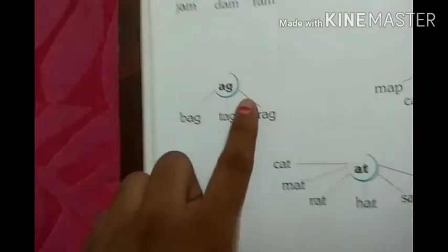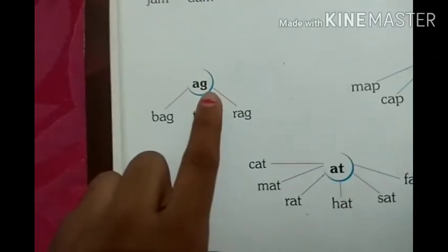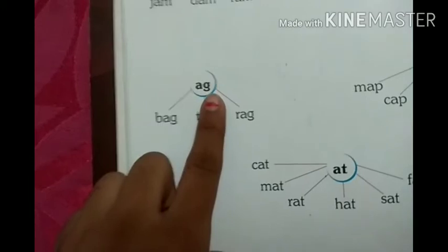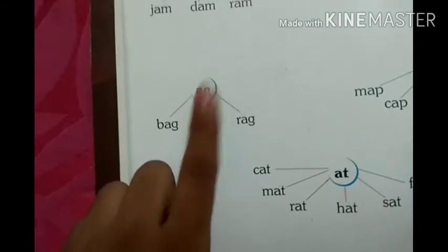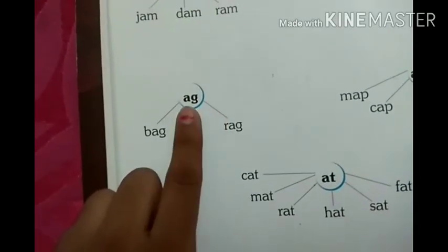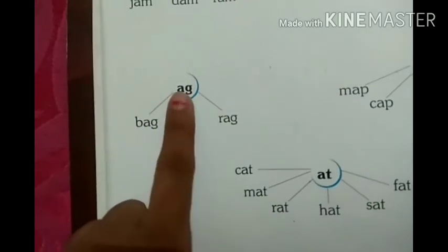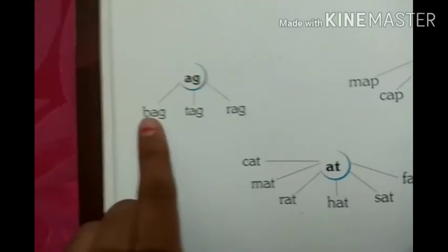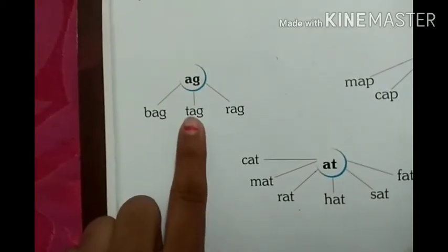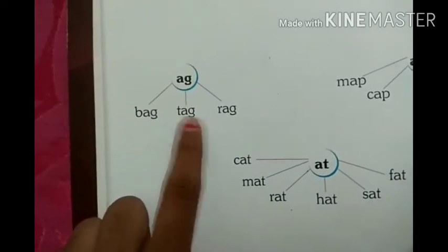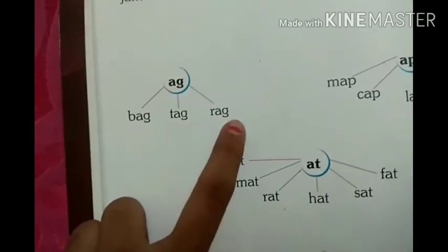A and G make AG. What is the sound of G? Yes, the sound of G is G, not J. G makes G. Repeat it with me: G makes G. So A and G makes AG. B, AG — BAG. What is the sound of T? T — TAG. What is the sound of R? R — RAG. And drag.